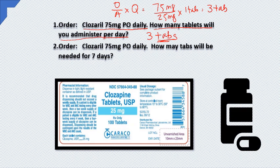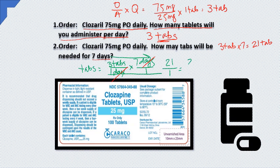The next question asks: order Closarol 75 mg PO daily — how many tablets will we need for 7 days? You know you're giving 3 tablets per day, so multiply by 7 to get 21 tablets. Using dimensional analysis: solving for tabs, you have 3 tabs per day for 7 days — multiply across the top to get 21, and the bottom gives 1, so the answer is 21 tablets.